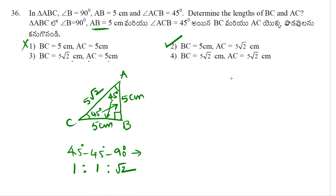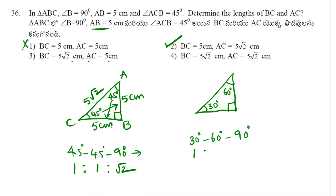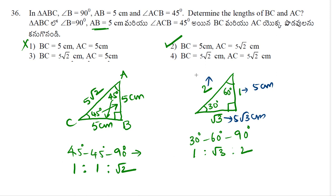For a 30-60-90 triangle, if the right angle is 90°, 30°, and 60°, the sides are in ratio 1:√3:2. If the side opposite to 30° is 5 cm, then the side opposite to 60° is 5√3 cm, and the hypotenuse is 5 × 2 = 10 cm. You can directly find the remaining sides in this way.